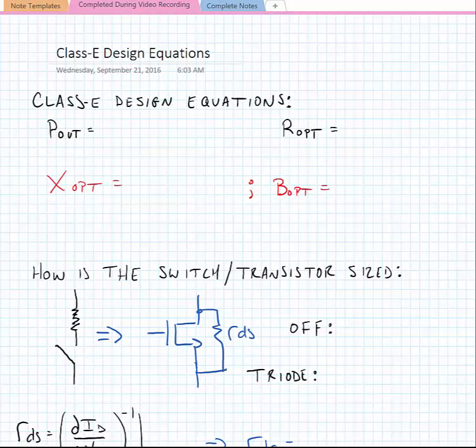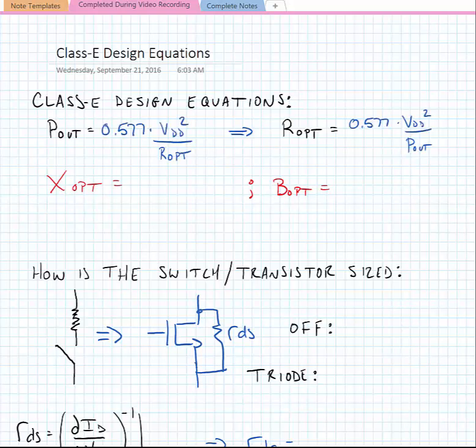And the SoCal paper that I had referred to in the last lecture was from JSSC in 1975. We can find the design equations for the class E power amplifier. And these are classical equations that are similar to all power amplifiers. We're going to relate the output power to an optimum termination impedance. And in this case, we're also going to use values that are synthesized for the XOPT and BOPT terms based upon that optimum termination resistance. Here we find that our output power is equal to 0.577 times VDD squared divided by ROPT. Or we could find ROPT if we had a required output power would be 0.577 times VDD squared divided by POUT.